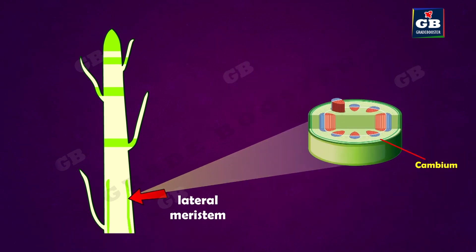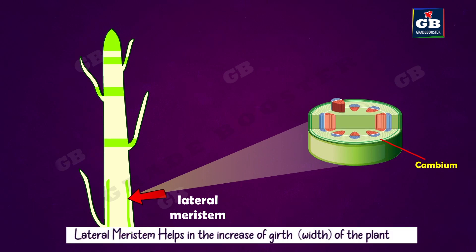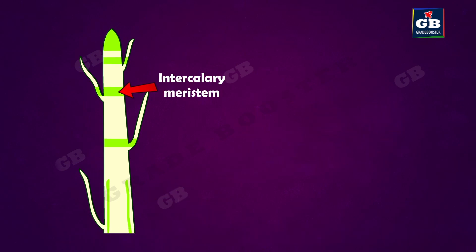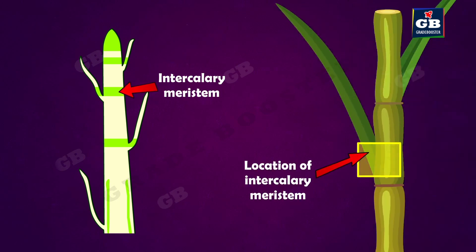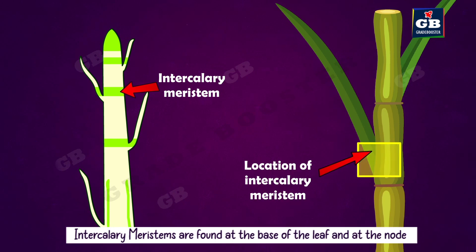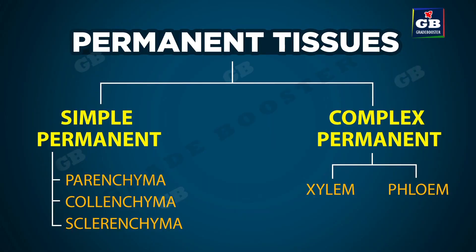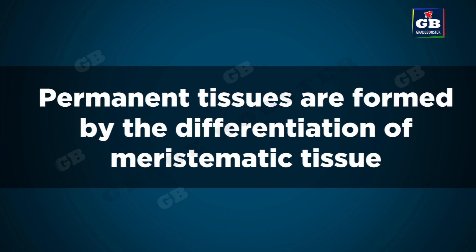Lateral meristem helps the plants to increase their girth. The third one, intercalary meristem, is mostly found in monocot plants like grass. Intercalary meristems are found at the base of the leaf and at the node.